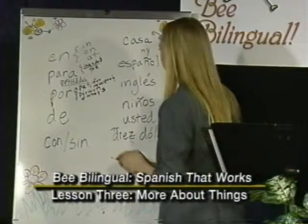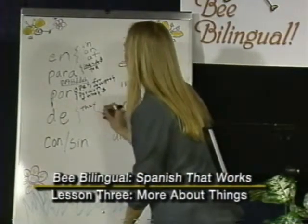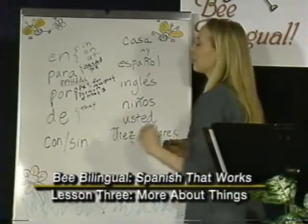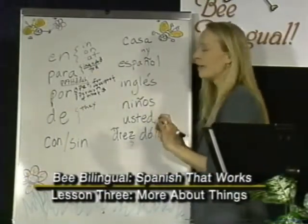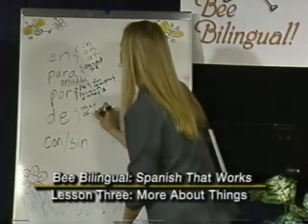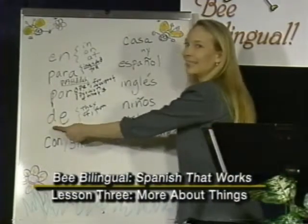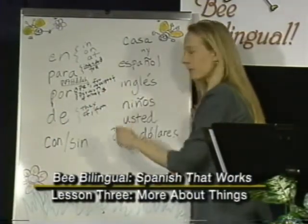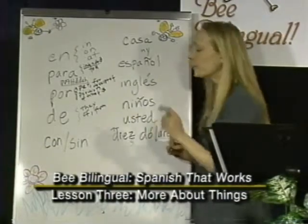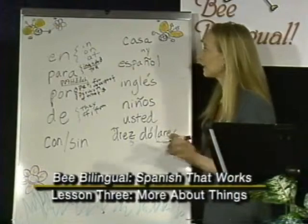Now this one — de — pronounced similar to the English word 'they,' as in 'they say,' but with a slightly shorter e. It means 'of' or 'from,' and you can think of it as the describing preposition, because in Spanish you cannot put two nouns together as you would in English and have it make sense.